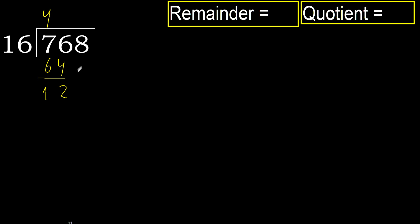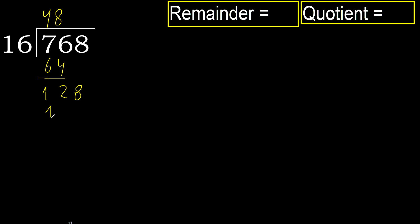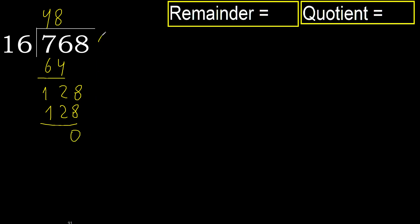Next. 16 multiplied by 9 is greater. Multiplied by 8 — 128 is not greater. Subtract: 0. Next — that is not a number, therefore finish it.